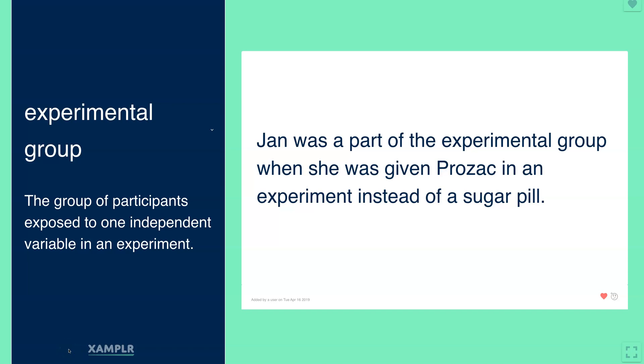Here are some examples of experimental groups. Those are the groups of participants exposed to one independent variable in an experiment.